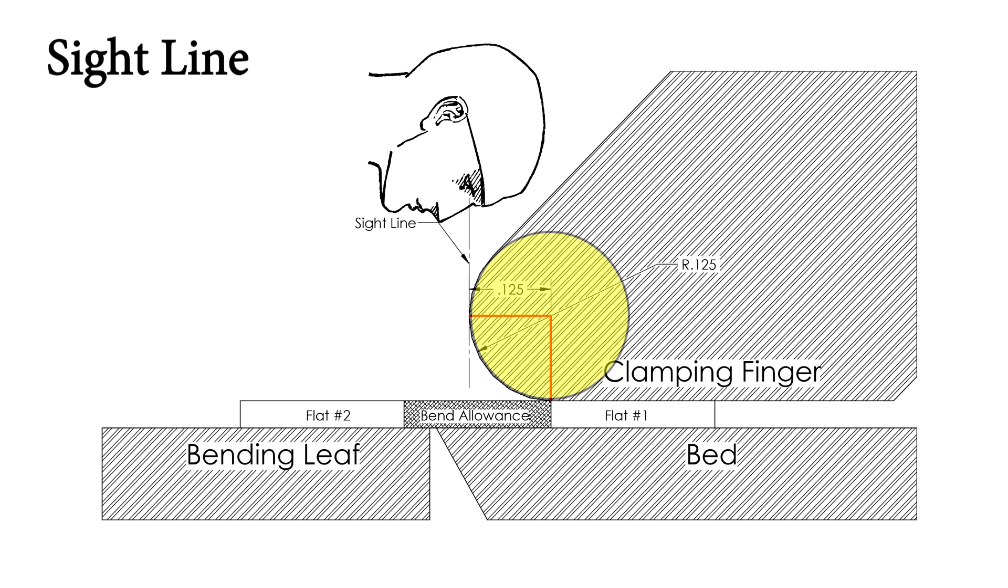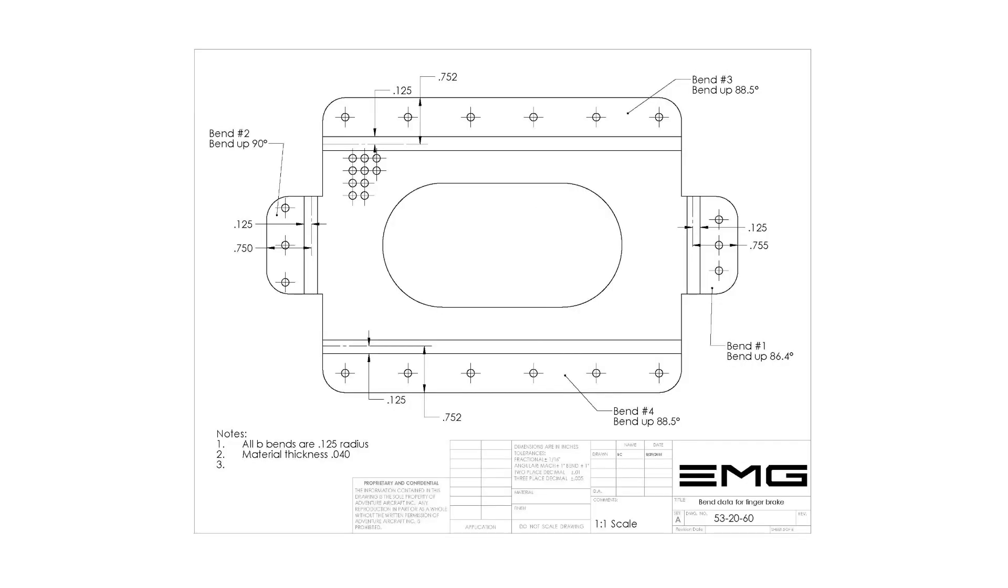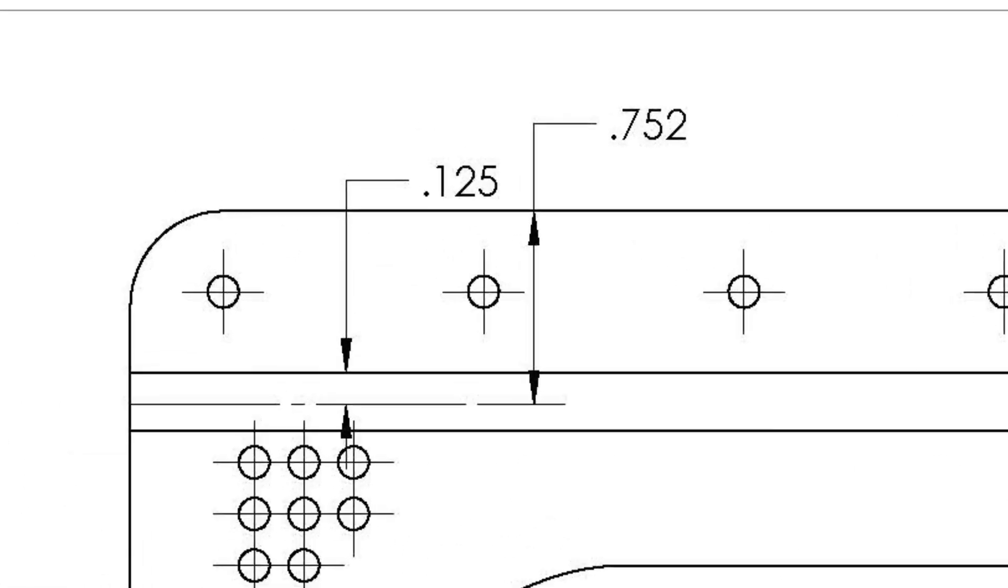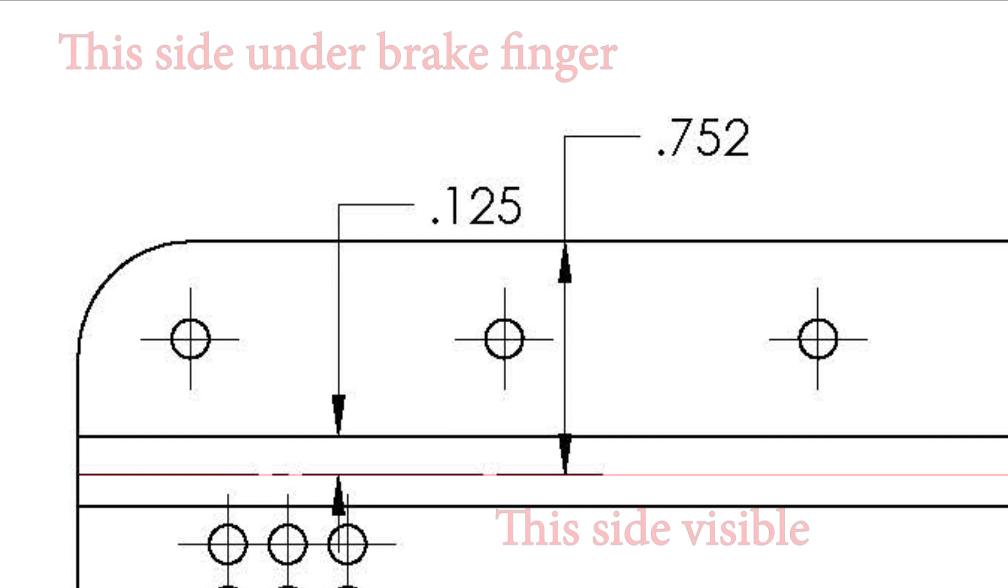Although it may appear close in some circumstances, the sight line is not the center of the bend allowance. As a result, if you create a sight line and then inadvertently position the layout 180 degrees from your intended position, this will completely reposition the bend allowance and your final product will be long on one flat section and short on the other.